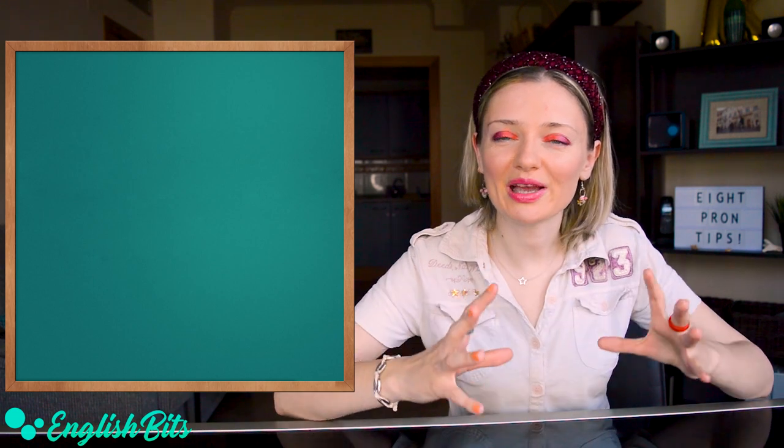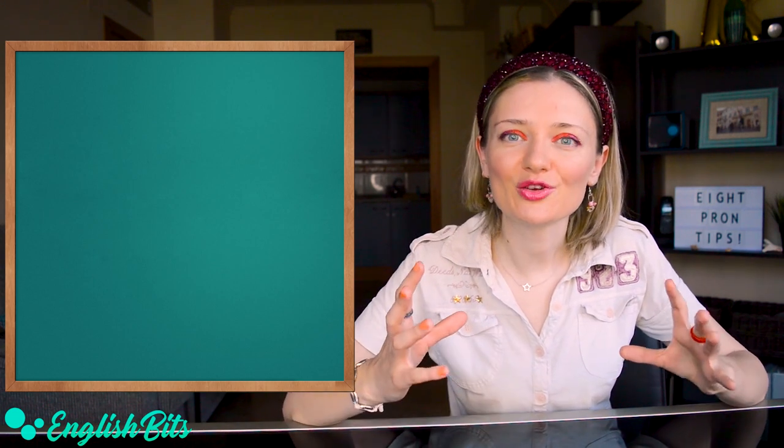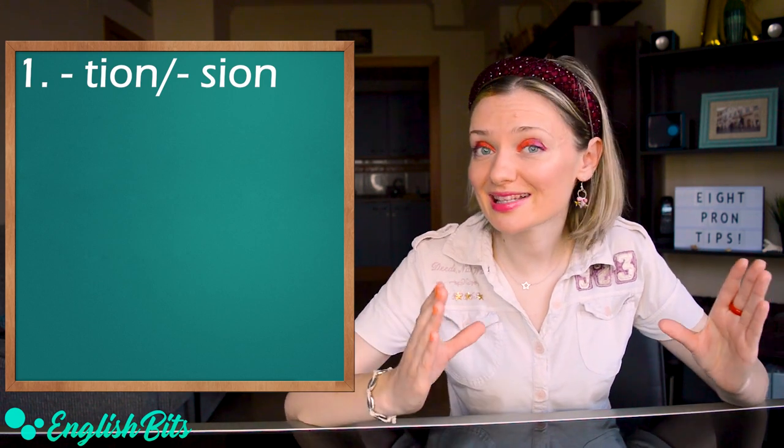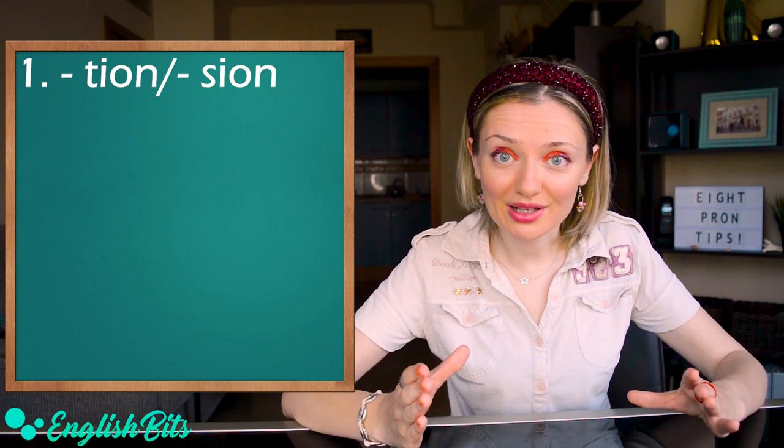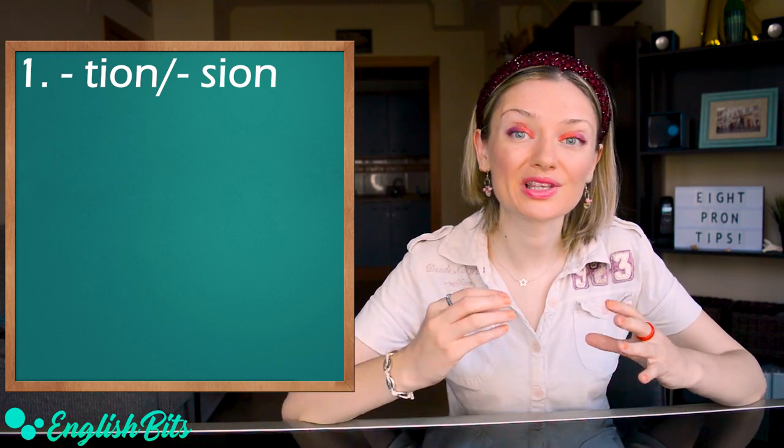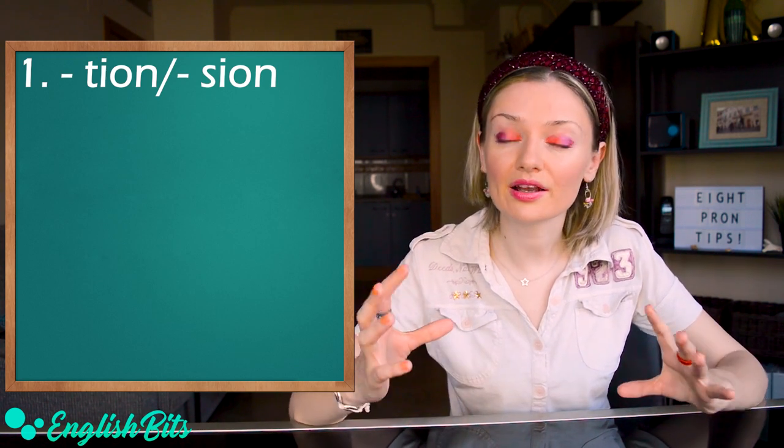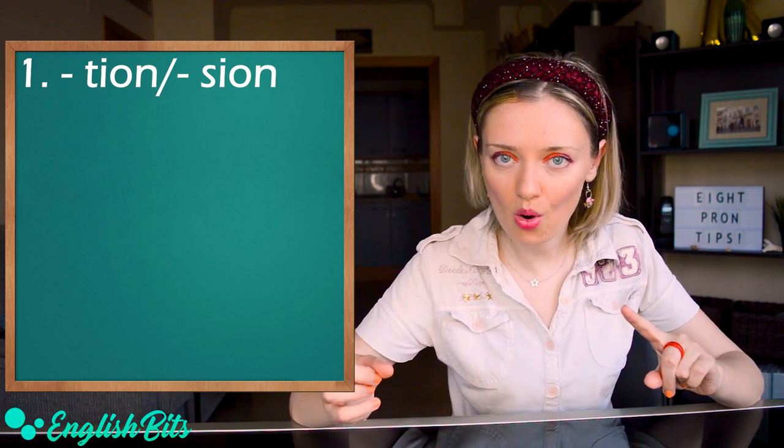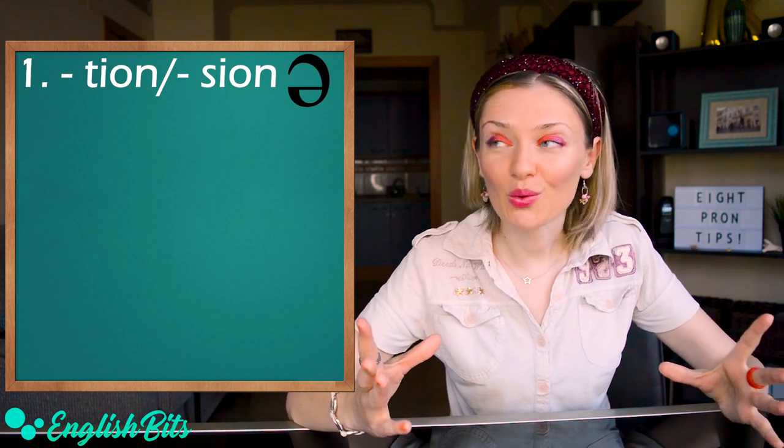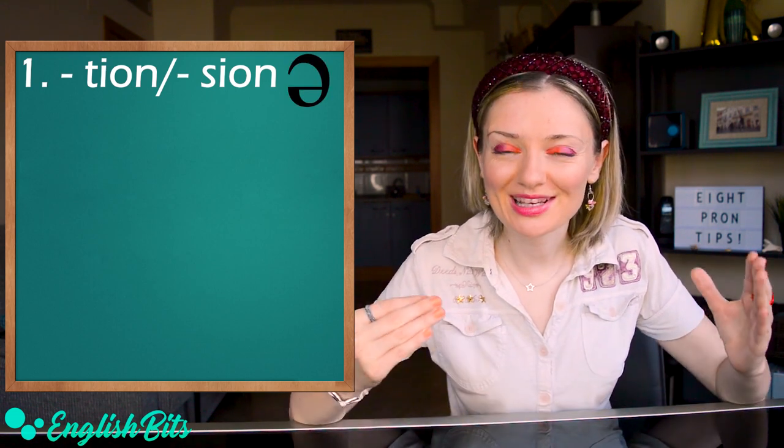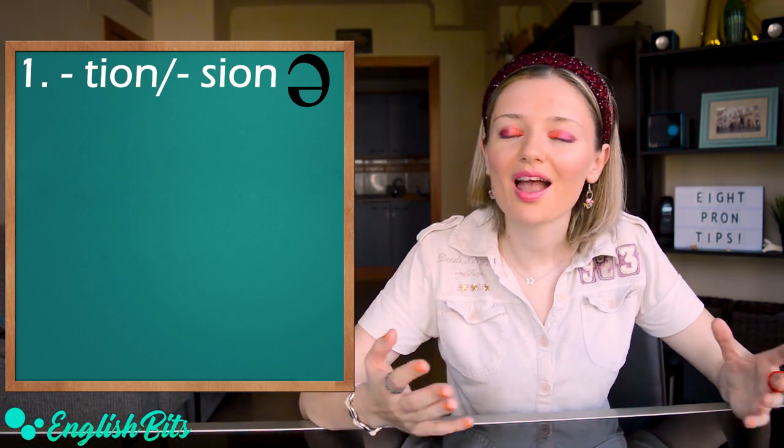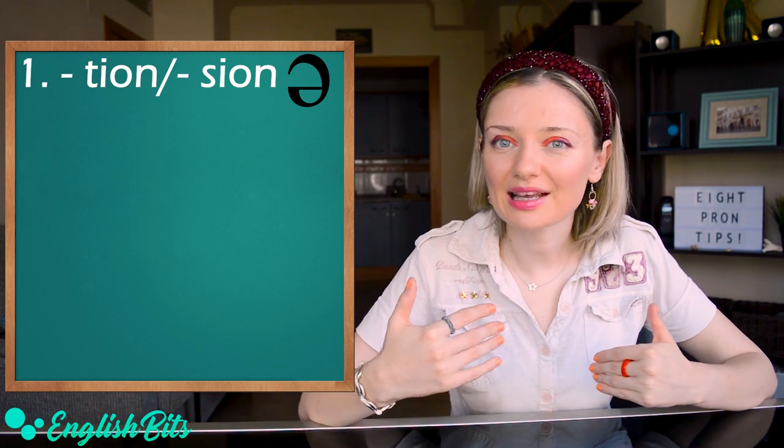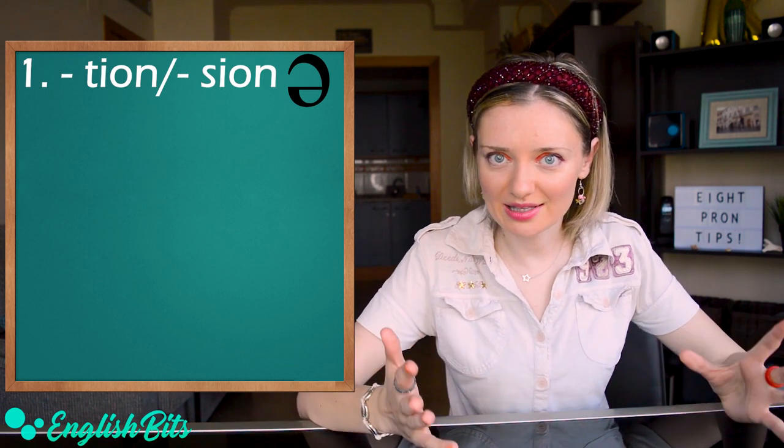My first tip is to pay attention to the way you pronounce the suffixes t-i-o-n and s-i-o-n. Spanish students tend to pronounce these endings like shon. And here we don't have the sound o but schwa, which is the most common sound in English. The sound schwa is unstressed, neutral, very quick and lazy. Let's look at some examples.